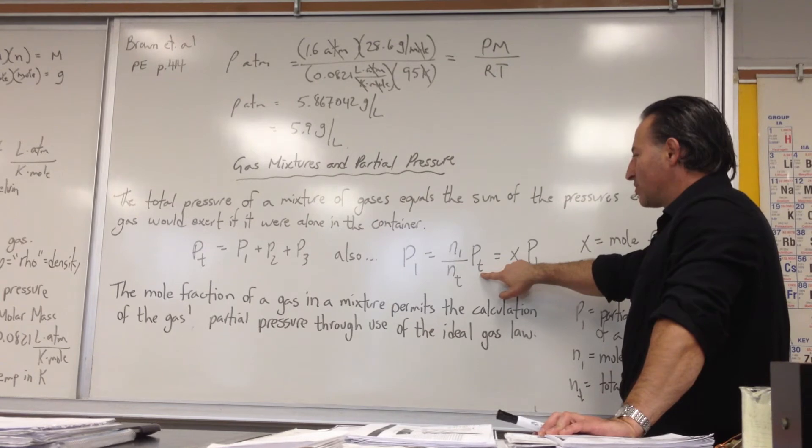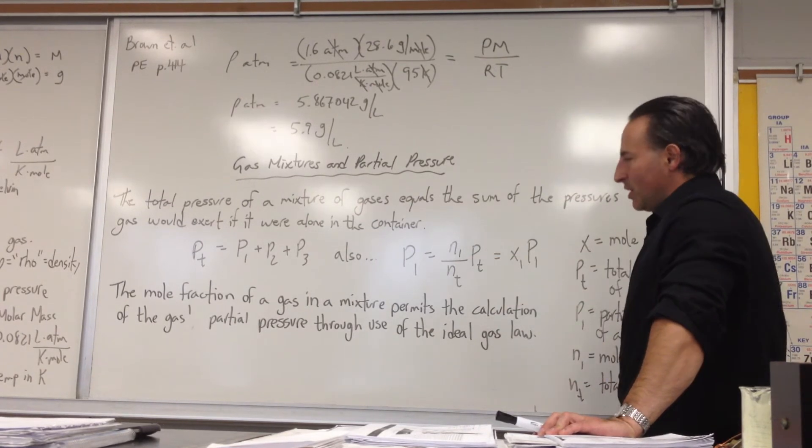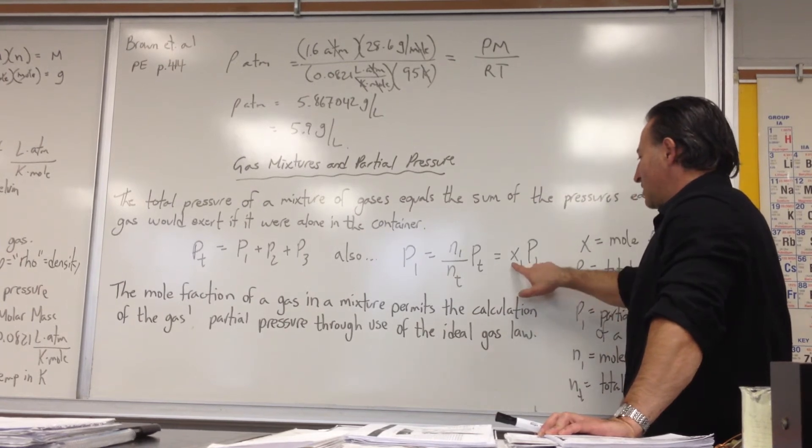And then you multiply that by the total pressure exerted by the mixture of gases to get the partial pressure of the gas that you're measuring. That's what this X symbolizes.